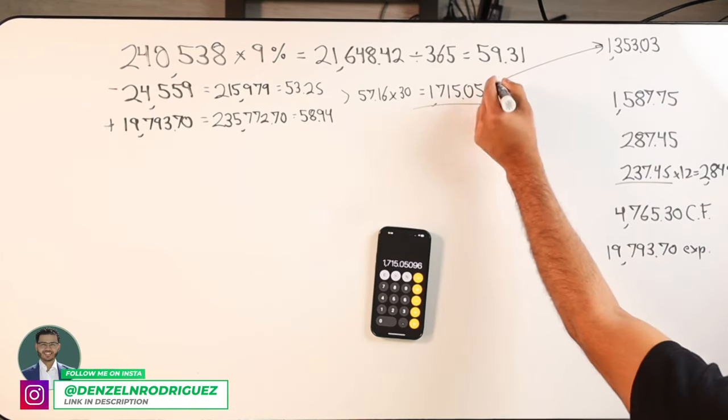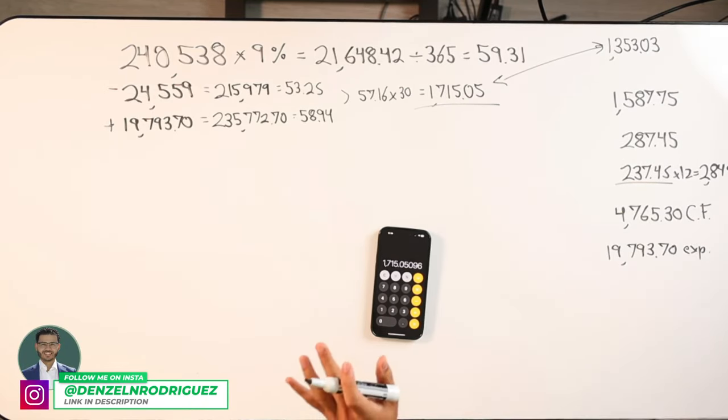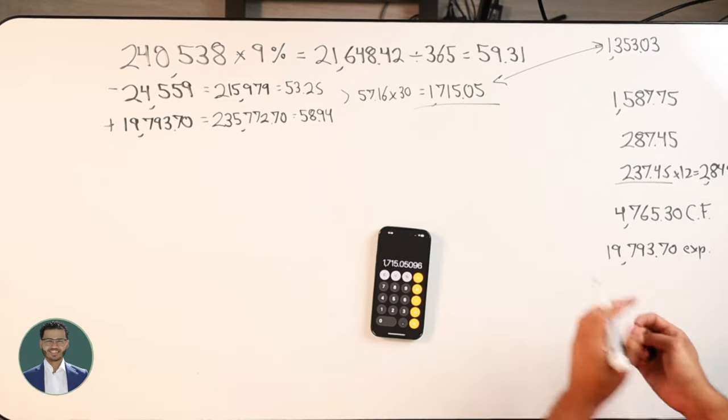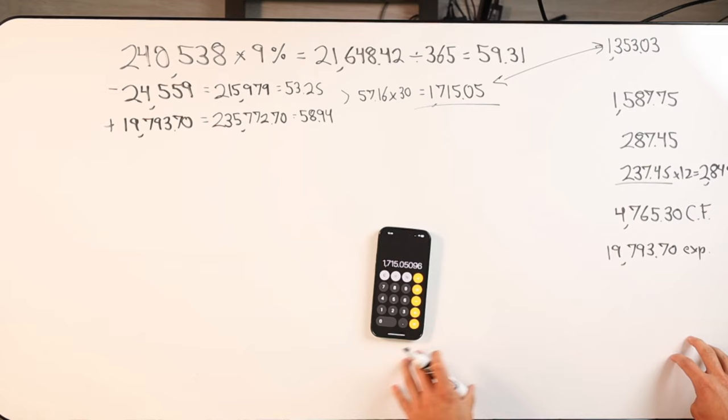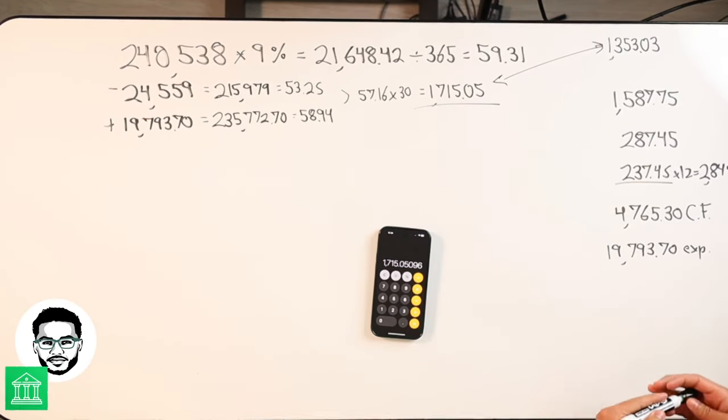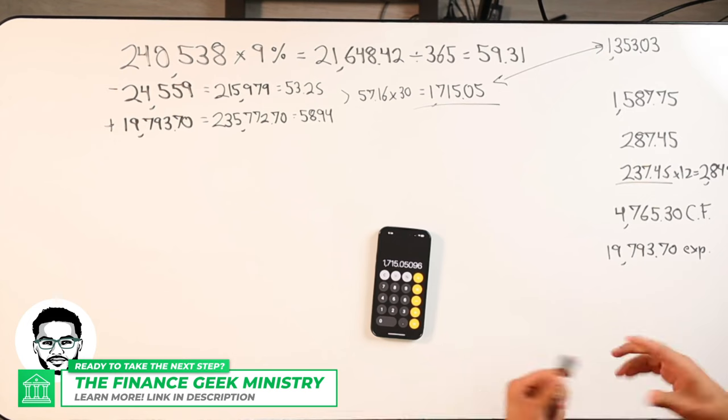So when I see that big of a gap, I tell my clients that doesn't make sense to me. So velocity banking the whole way through on this particular mortgage would not make sense for me personally.